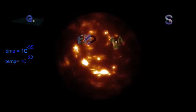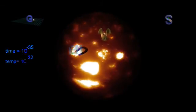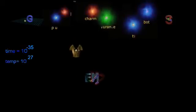This expansion and subsequent cooling down to 10 to 27 degrees allows six different types of quarks to form.